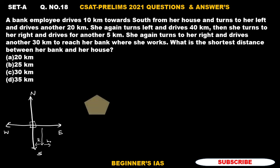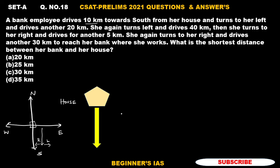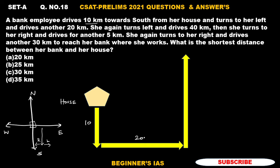I am considering this as her house. From here, she drives 10 kilometers towards the south — marking 10 here. Then she takes a left turn and drives another 20 kilometers — marking 20 here. Then she again turns left and drives 40 kilometers. Then she turns to her right.